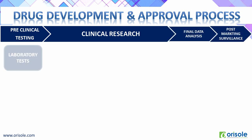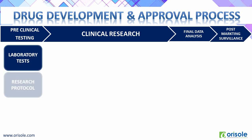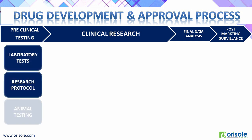In preclinical trials, the laboratory synthesis of the molecule will be done, then the research protocol is prepared and the drug is tested on animals. The data from the preclinical trials is sent to the regulatory authority for review. If the regulatory authority gives approval for trials in human beings, then clinical trials in human beings will start.